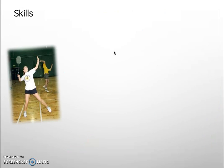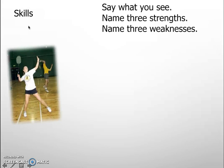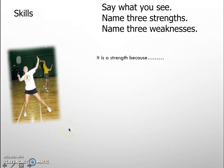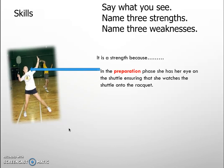Now let's move on to skills. Again, say what you see and name three strengths and three weaknesses. The key difference between skills and fitness is that for skills we look at three phases: the preparation phase, the execution phase, and the recovery phase.